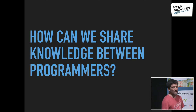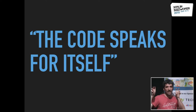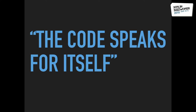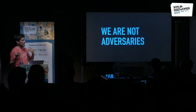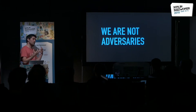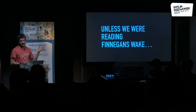So, back to the original question: how can we share knowledge between programmers? You've probably been in this team — there's somebody, the 10x engineer, telling you that the code speaks for itself. But something we need to understand when we read code is that we are not adversaries. Why do we have this mentality that you should be able to deep dive into the code and reverse-engineer it? We are not adversaries, this is not a hacking competition, this is a team working together. Imagine every time we try to read a book we have to play codebreakers.